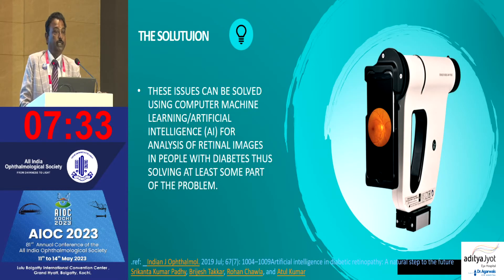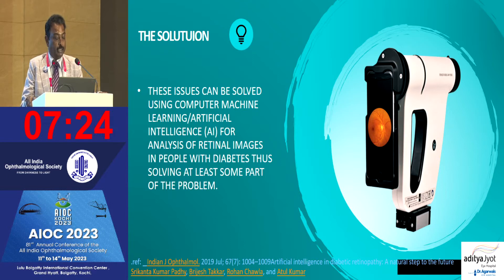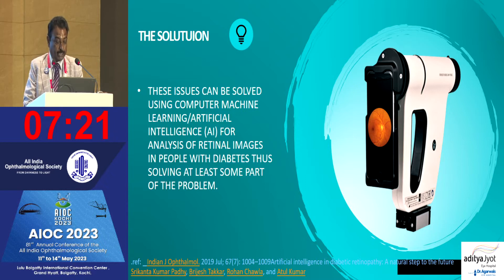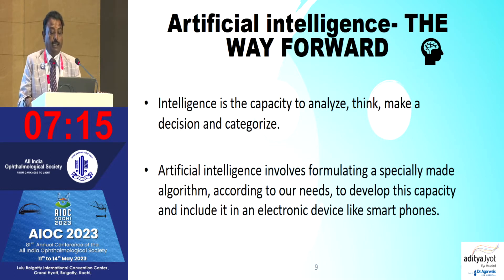These issues can be solved using computer machine learning — AI for analysis of retinal images in people with diabetes — thus solving at least some part of the problem, as published by Dr. Atul Kumar and team. Intelligence is the capacity to analyze, think, make decisions, and categorize. Artificial intelligence involves formulating a specially made algorithm according to our needs to develop this capacity and include it in an electronic device like a smartphone.